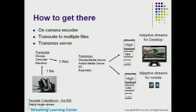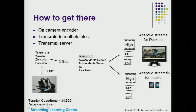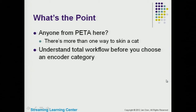Yet another way to get adaptive streams for desktop and mobile is to have an on-camera encoding tool, send it to a live transcoding service or transrating service. You send one stream into the cloud or to a server, it creates three files, those go to a transmux server, and you get the adaptive streams. There's more than one way to get there.